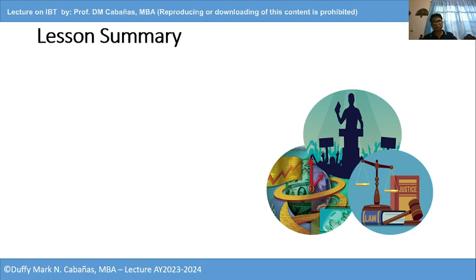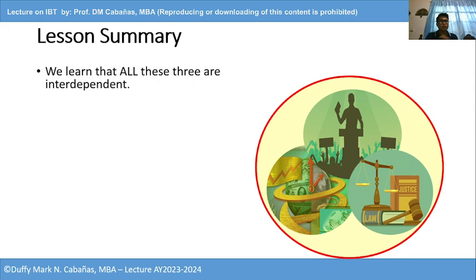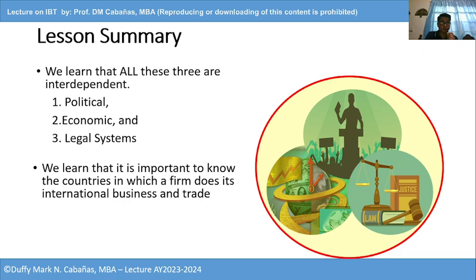Lesson summary: all encompassing, all intertwined, all interdependent. We learned that all three — political, economic, and legal systems — are interdependent. We learned that it is important to know the countries in which a firm does its international business and trade, and we know how to apply that as HRM students. That's our lecture video 2. I hope that gives you additional insight on our study of international business and trade. Thank you.